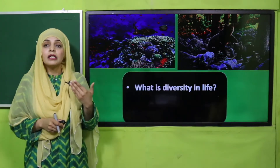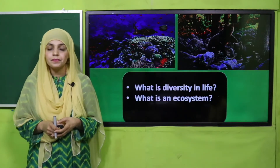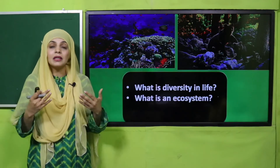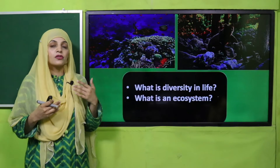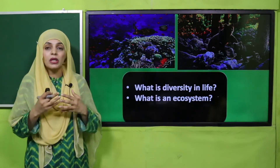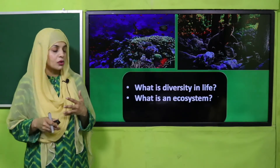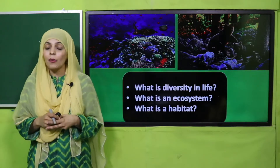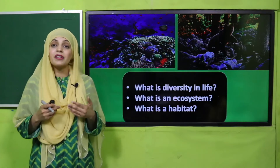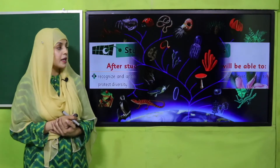What is an ecosystem? An ecosystem is the interaction between animals, their surroundings, and with one another. This interaction between living things and their environment is called an ecosystem. What is a habitat? A habitat is the natural home of plants and animals.